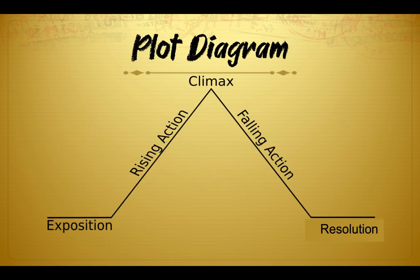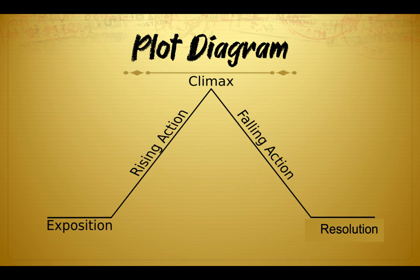But before, let me show you the plot diagram. This is a plot diagram, and usually we complete it in class. So the exposition is the first part of the story. This is like a mountain, so we need to go up in the story. That's the rise in action where the suspense is created. Then the climax is the highest point — the turning point. Then we have the falling action, and then the solution — the end of the story — is called the resolution.